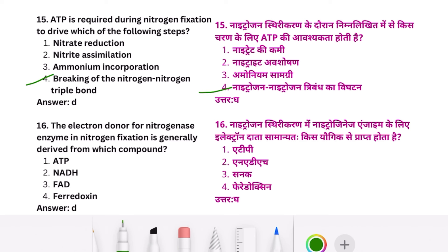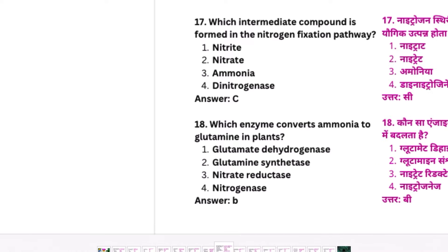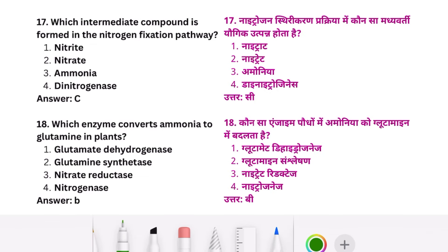The electron donor for nitrogenase enzyme in nitrogen fixation is generally derived from which compound? This is a very easy question — ferredoxin is your right answer. Which intermediate compound is formed in the nitrogen fixation pathway? Ammonia.